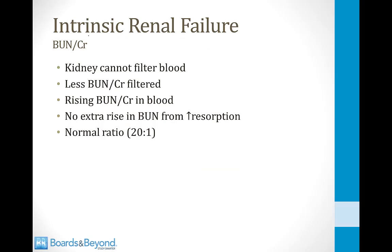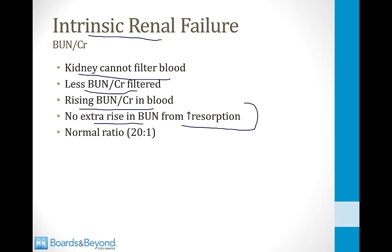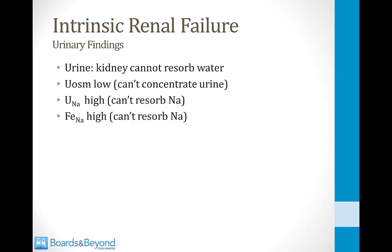In intrinsic renal failure, the kidneys cannot filter blood, so BUN and creatinine both rise. However, there is no extra BUN rise from increased reabsorption, so the BUN-to-creatinine ratio remains normal at about 20:1. Because the kidneys are dysfunctional, they can't reabsorb water or concentrate urine, resulting in low urinary osmolarity, high urinary sodium, and high FENA.